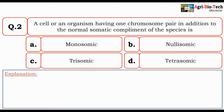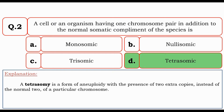Next question: A cell or an organism having one chromosome pair in addition to the normal somatic complement of the species is — monosomic, nullosomic, trisomic, or tetrasomic? The correct option is tetrasomic, because a tetrasomic is a form of aneuploidy with the presence of two extra copies of a particular chromosome instead of the normal two.